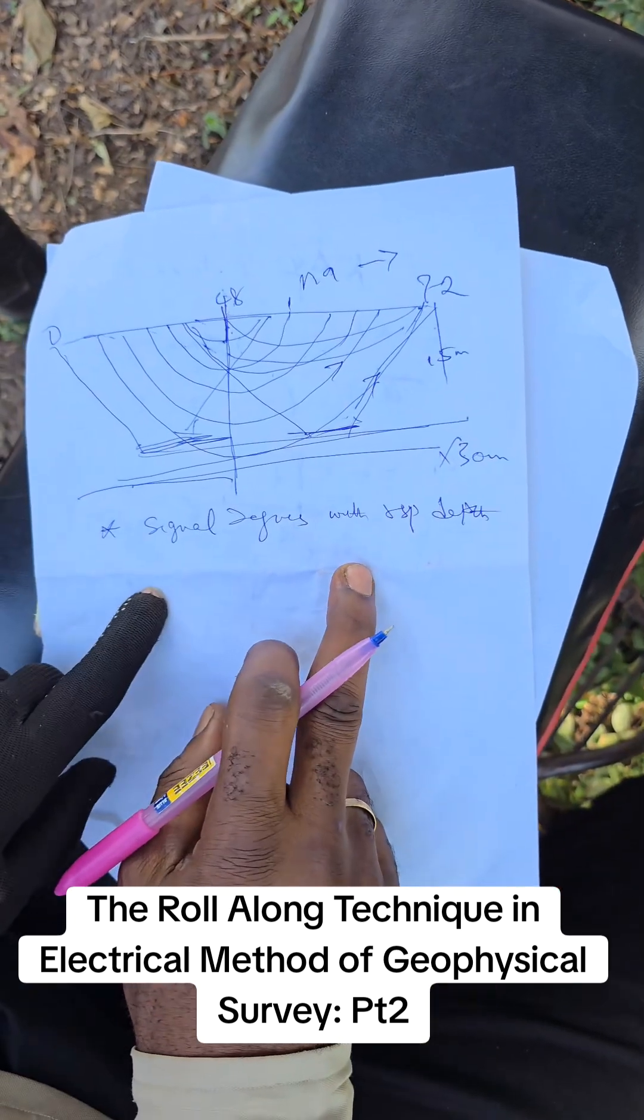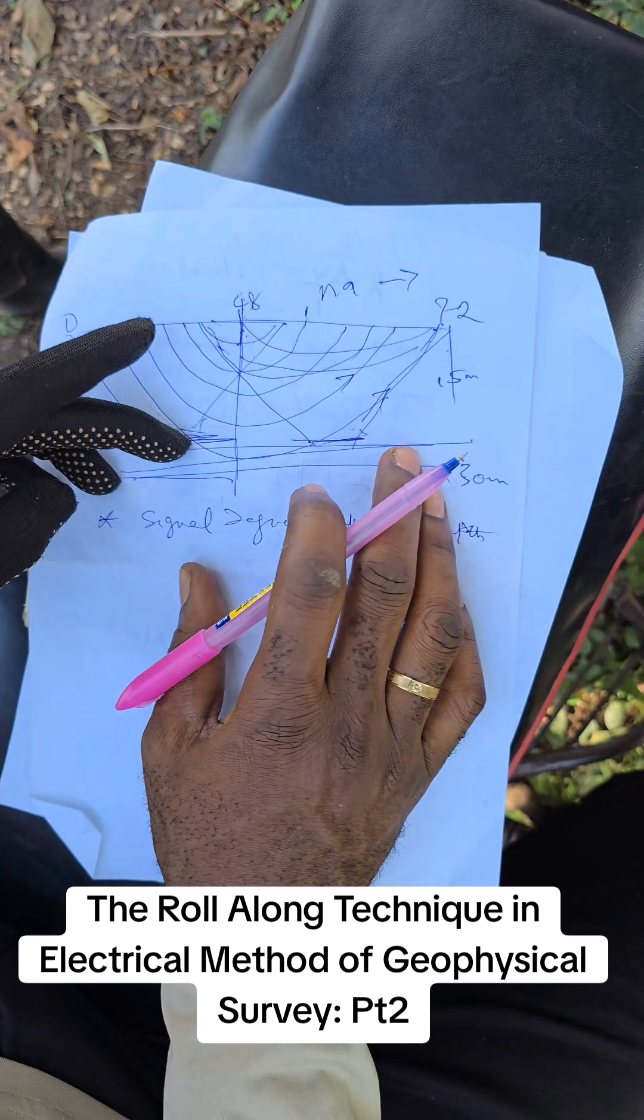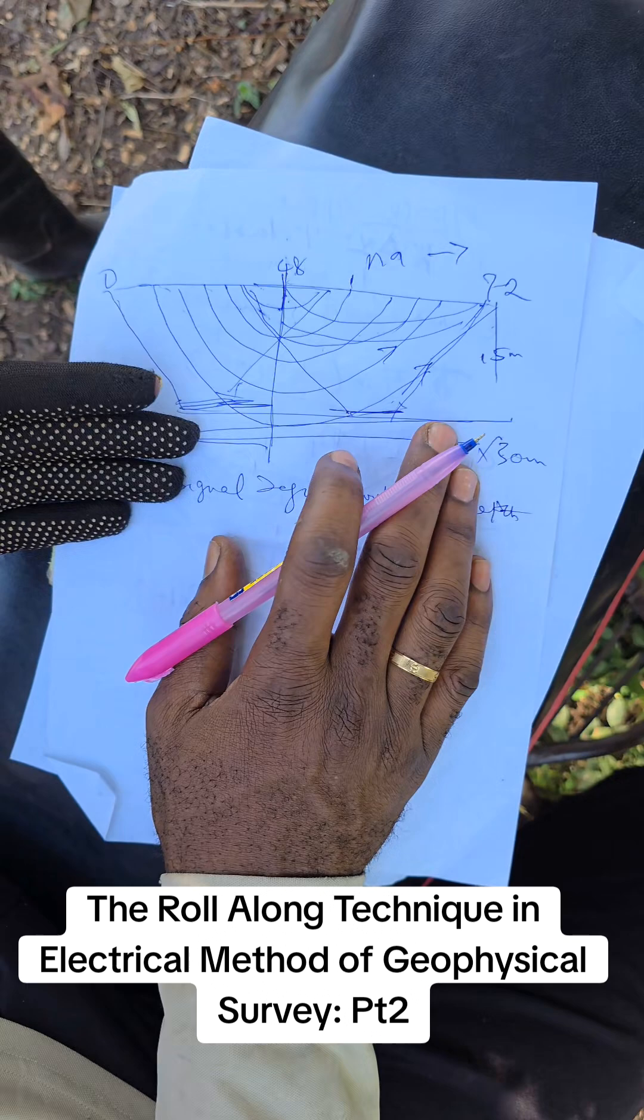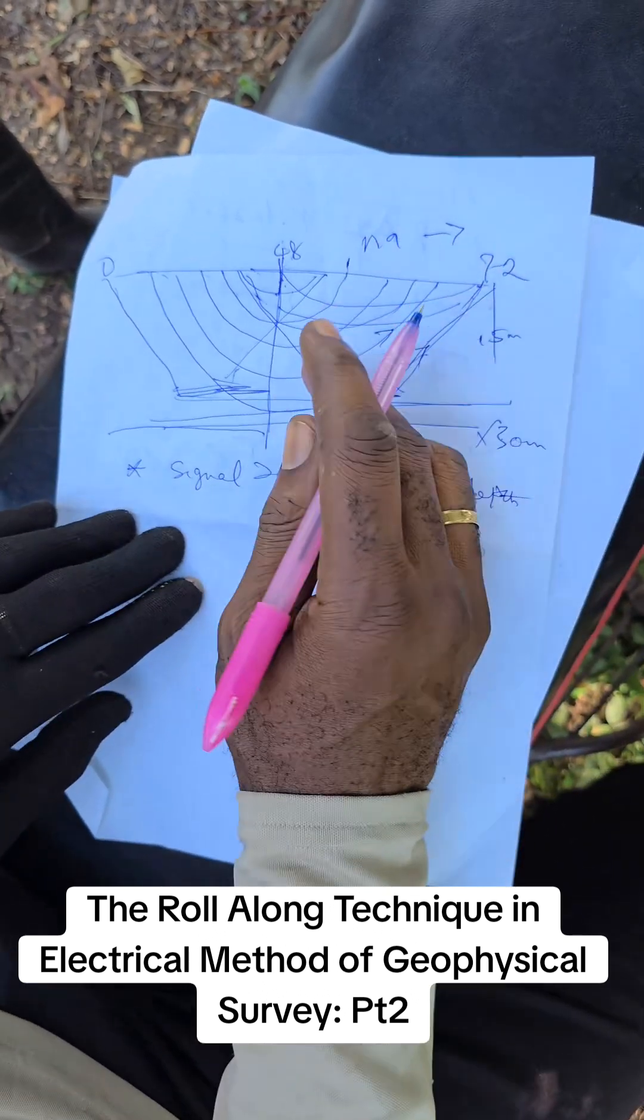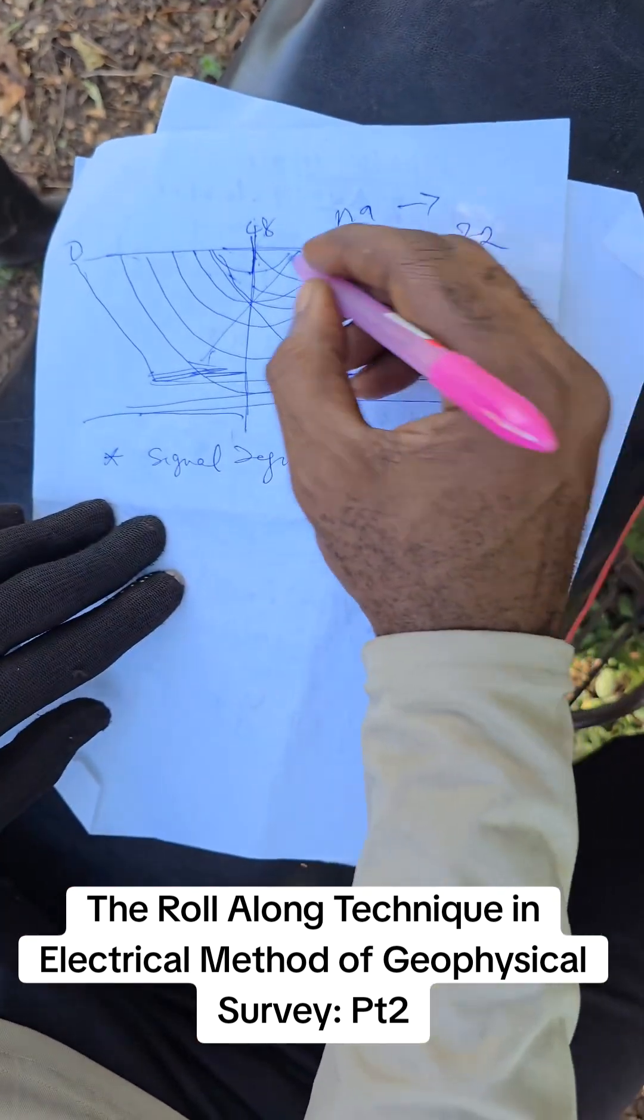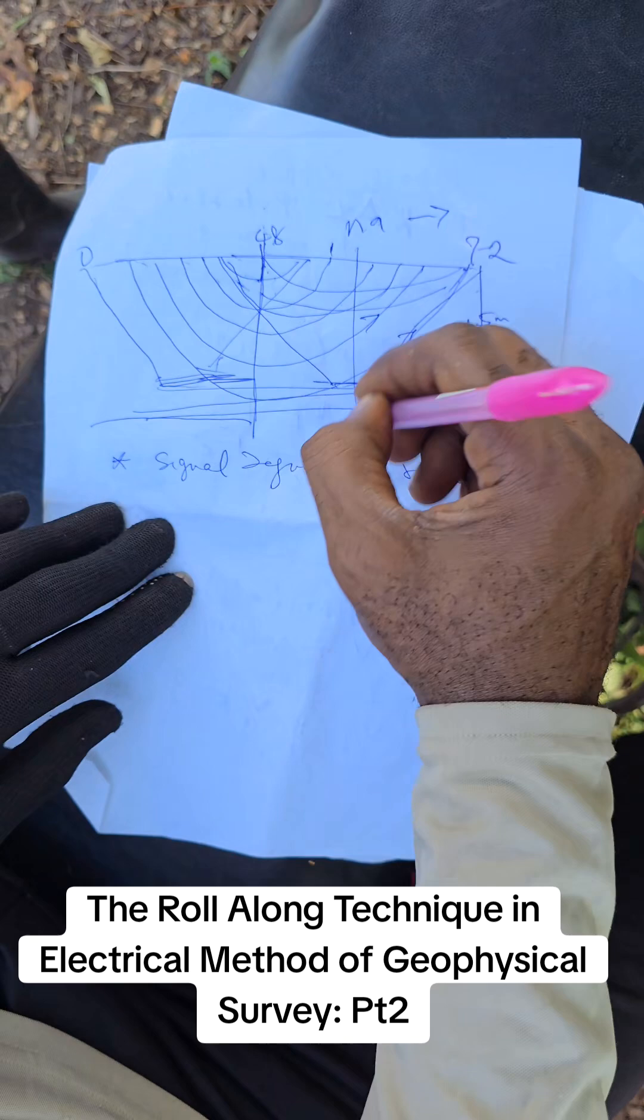You need to know that the more you go down, the more you lose current and your signal decreases. But this is very good if you are looking for something. A vein or body is very good because the more it goes this way, that's why we need